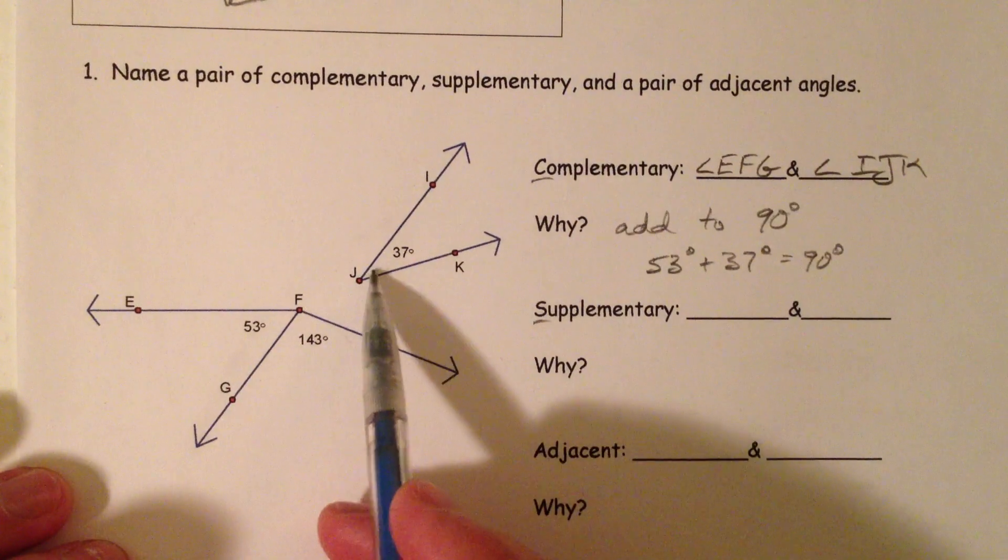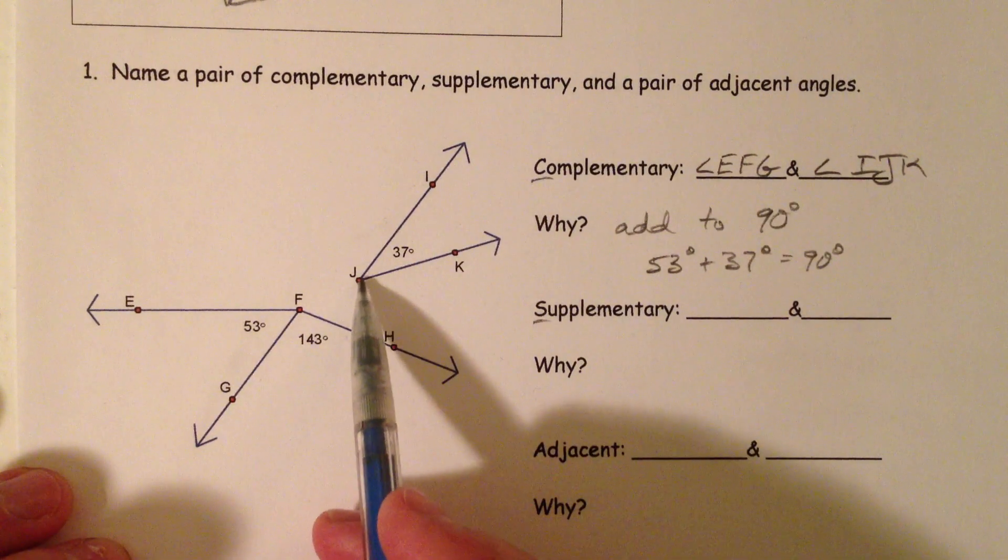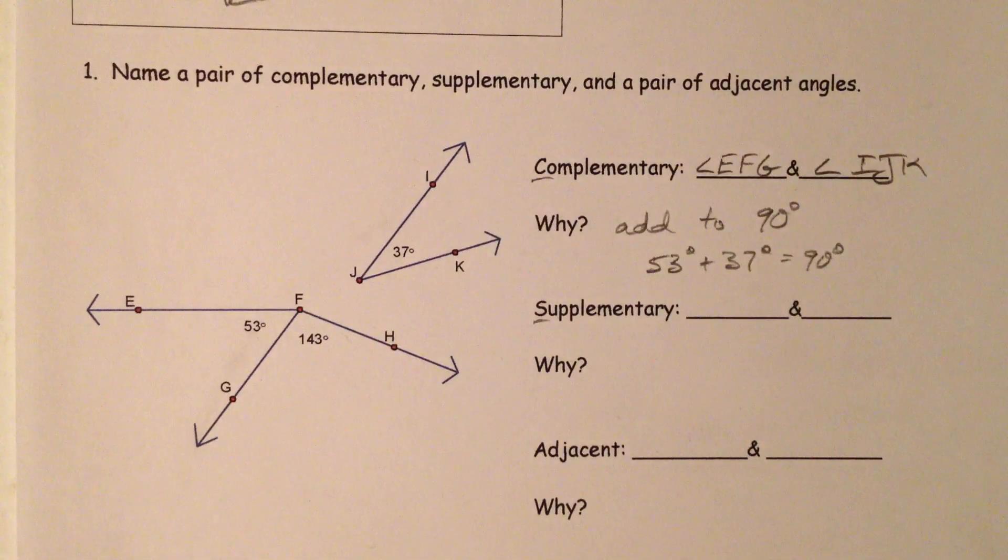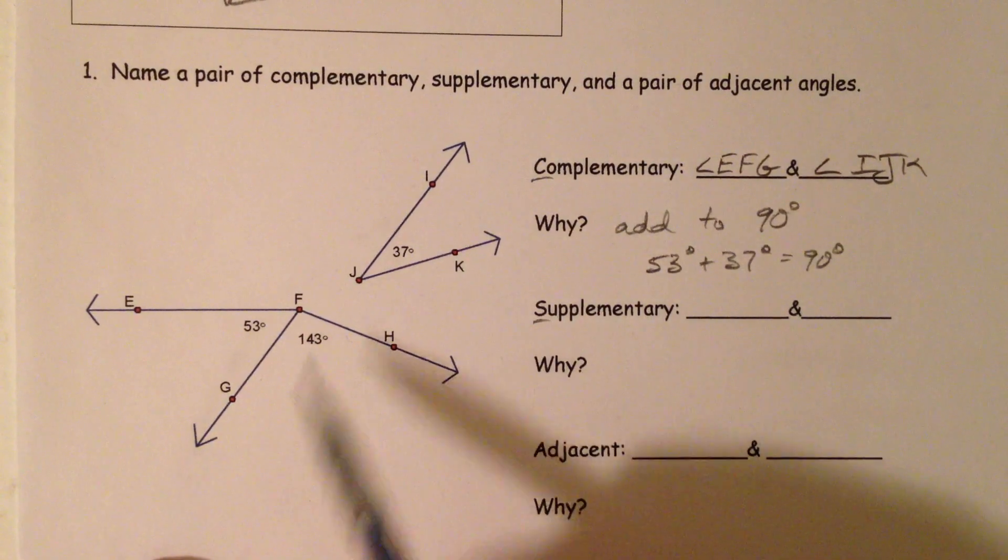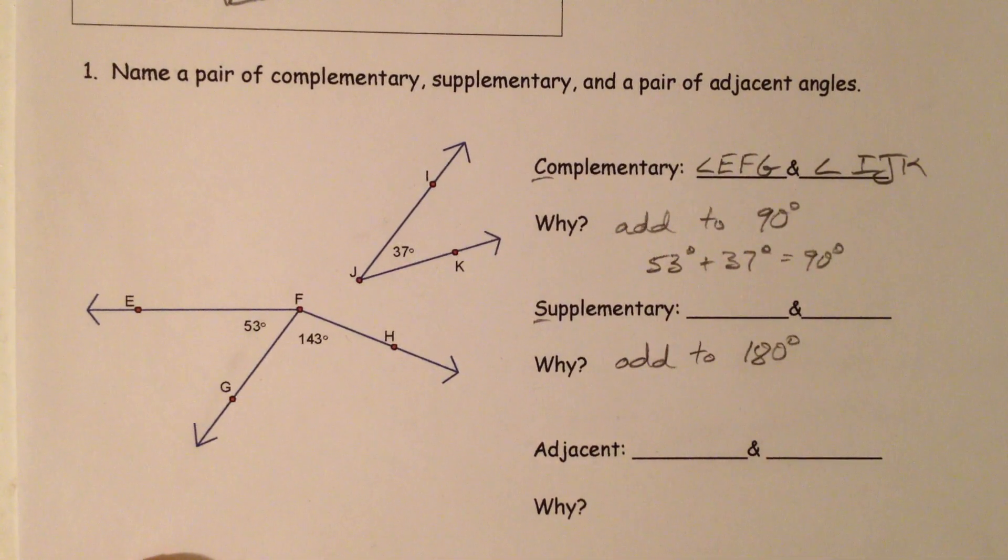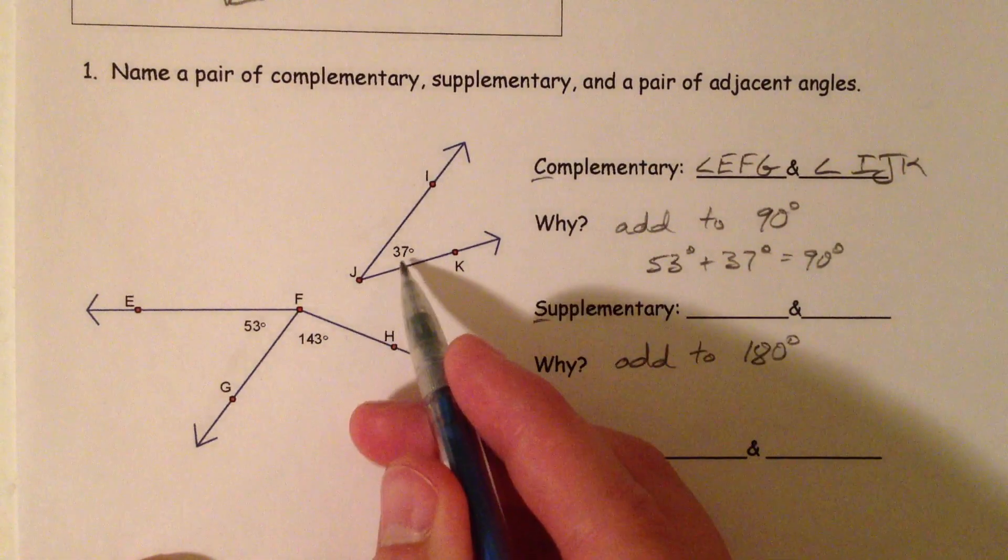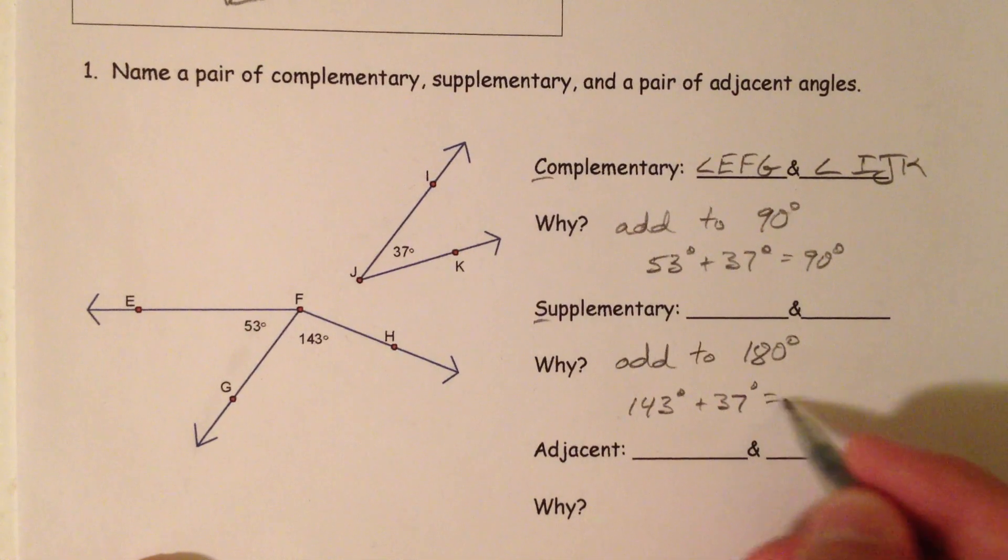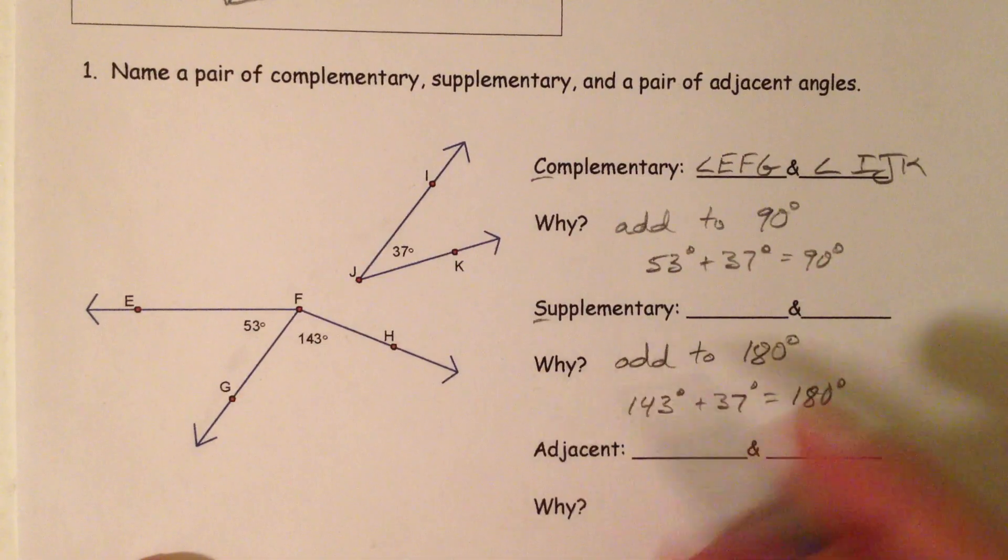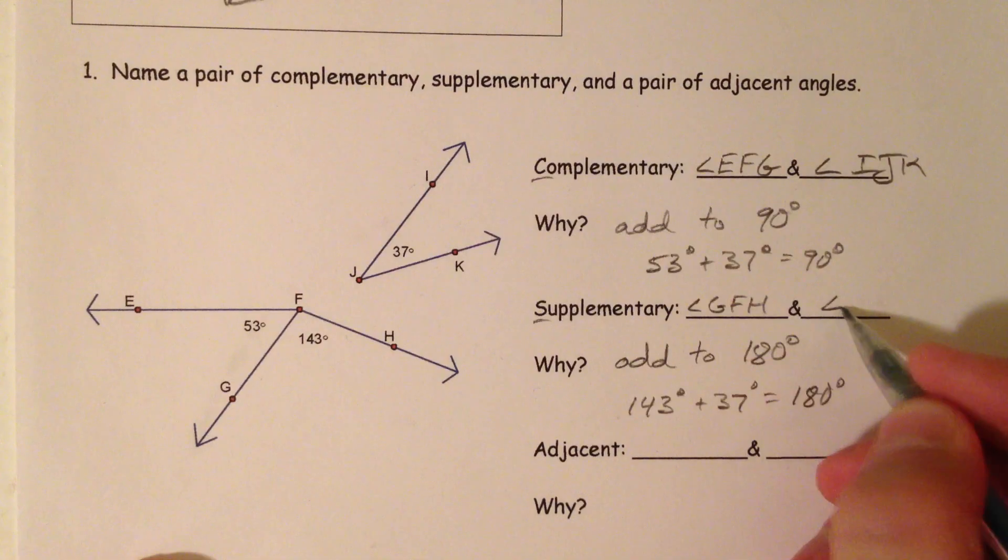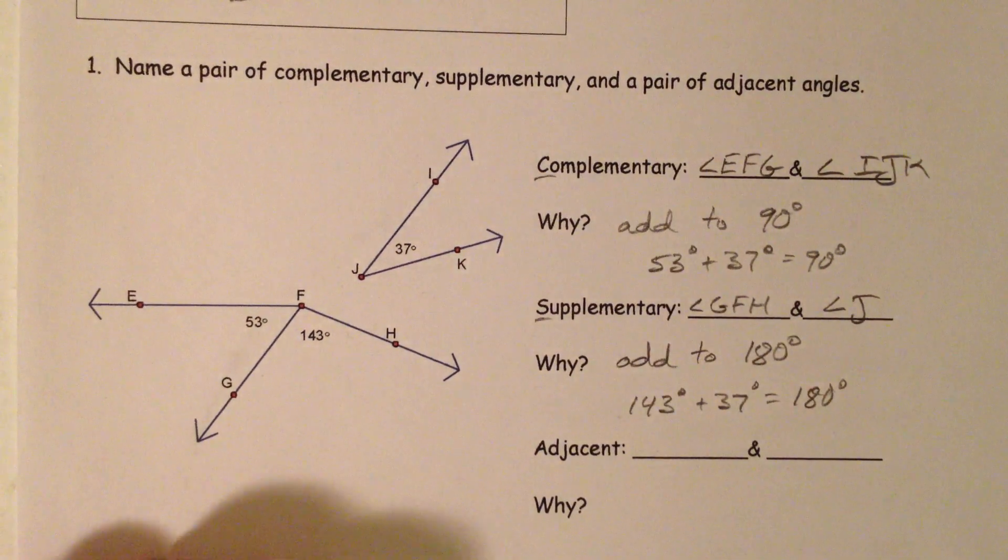Which ones are supplementary? Meaning they've got to add to 180. And so we've got 143 and 37, 143 plus 37, add to 180. And so we've got angle GFH. And I'm just going to say angle J because angle J is the other one there.